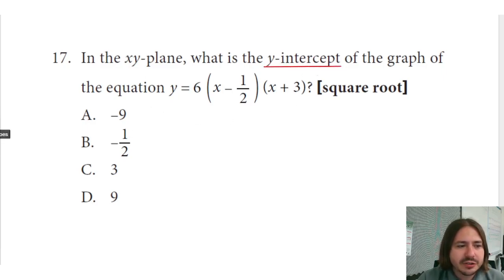The y-intercept, just to kind of go over the vocabulary for a moment here, is the point on the graph where your graph crosses the y-axis. So that's that vertical axis here.